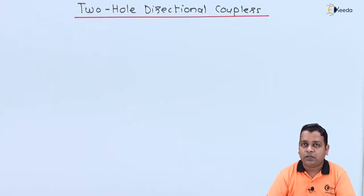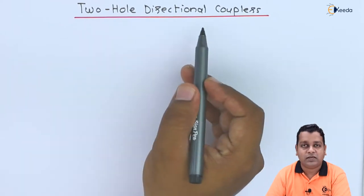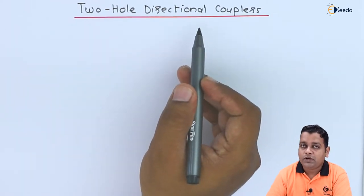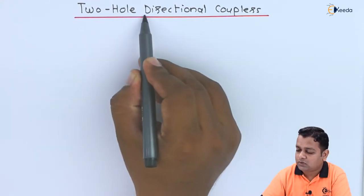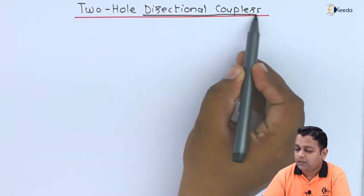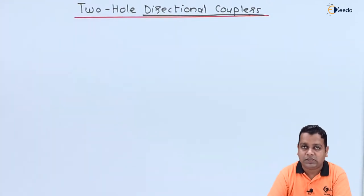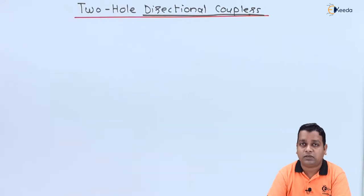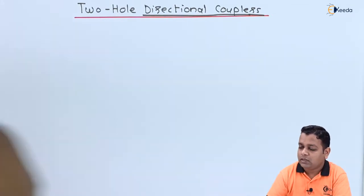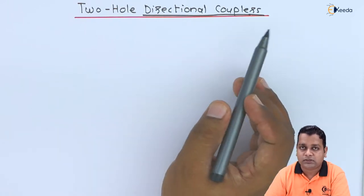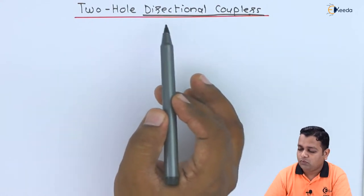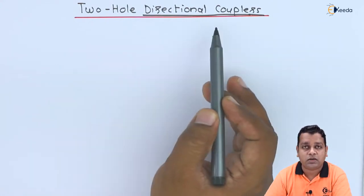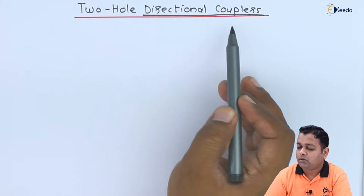We now start with our topic: the two-hole directional coupler. The directional coupler involves coupling of energy from the primary waveguide to the secondary waveguide, and this coupling is mostly in the forward direction — hence the name directional coupler.